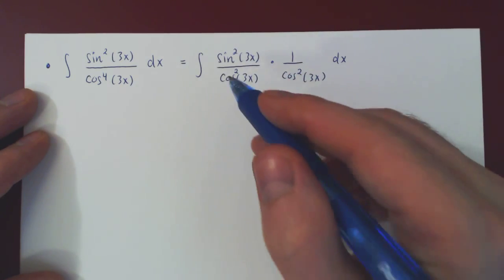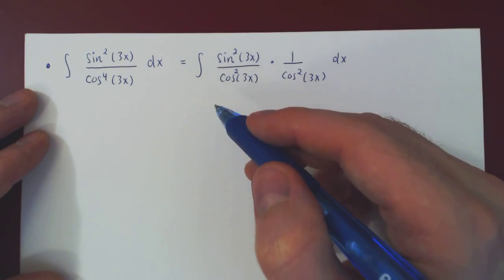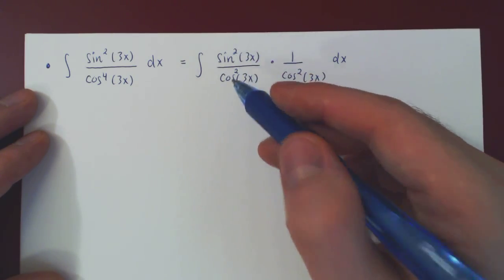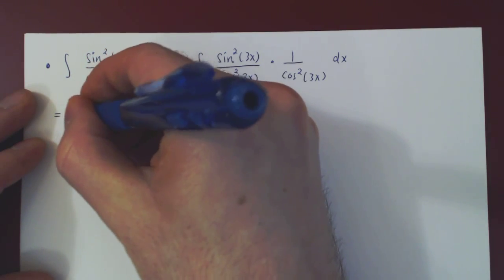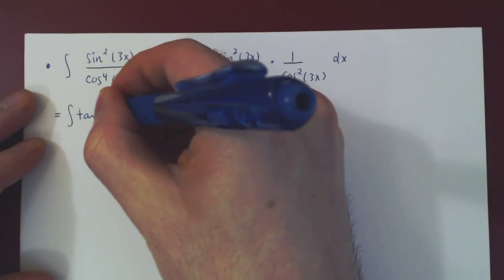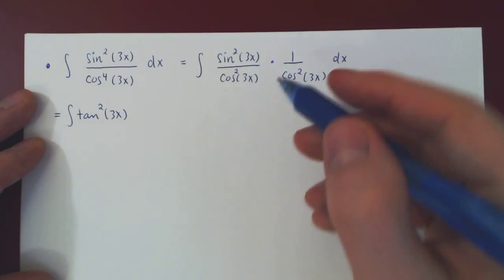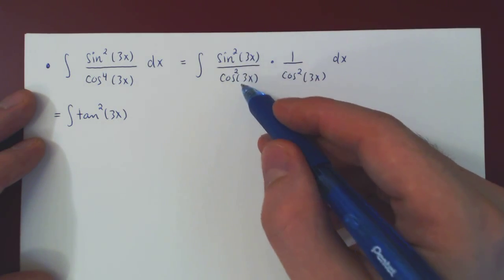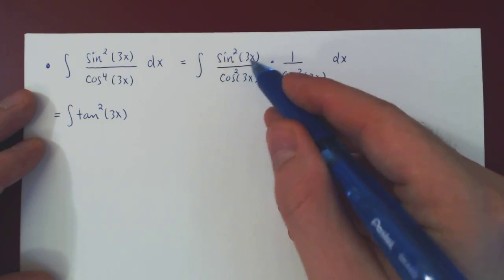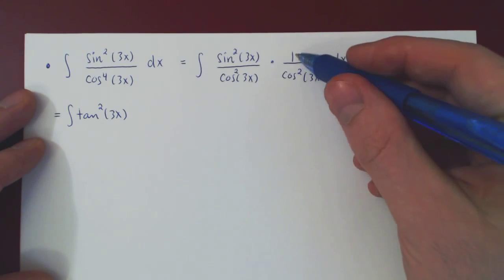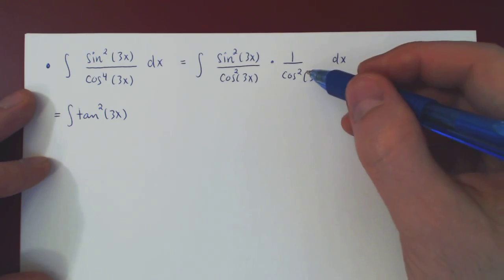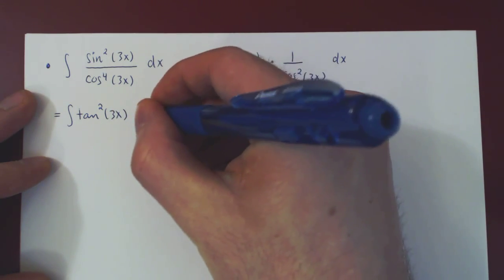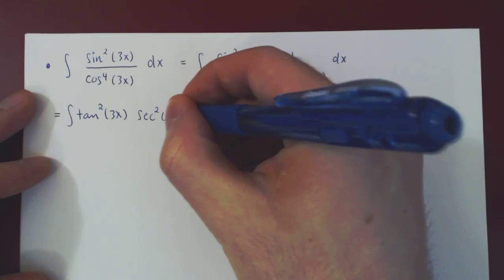Well, the arguments are still the same, and sine over cosine is tangent, and so sine squared over cosine squared is tangent squared. So sine squared of 3x over cosine squared of 3x is simply the tangent squared of 3x, and 1 over cosine of 3x is secant of 3x, and so 1 over cosine squared will be secant squared of 3x.